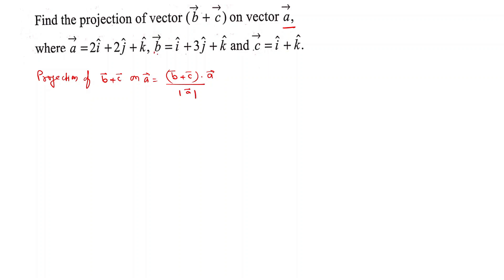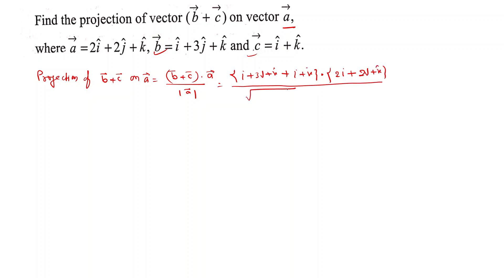So b plus c gives us (i plus 3j plus k) plus (i plus k), dotted with vector a which is 2i plus 2j plus k, divided by the magnitude of a, which is the square root of 4 plus 4 plus 1. That simplifies to (2i plus 3j plus 2k) dot (2i plus 2j plus k), divided by the square root of 9, which equals 3.